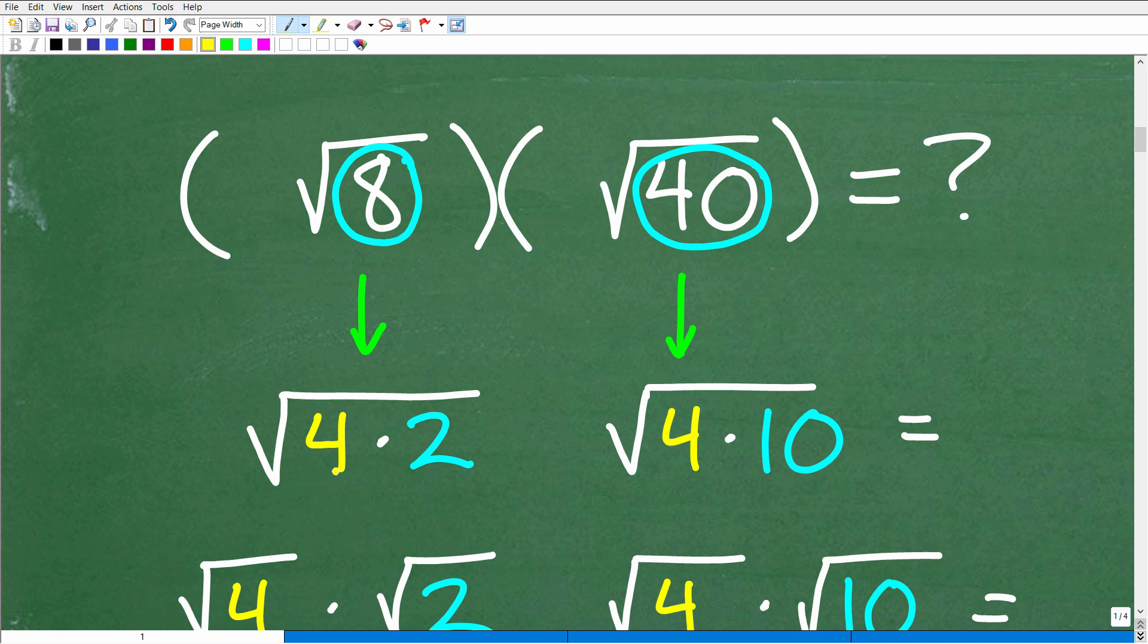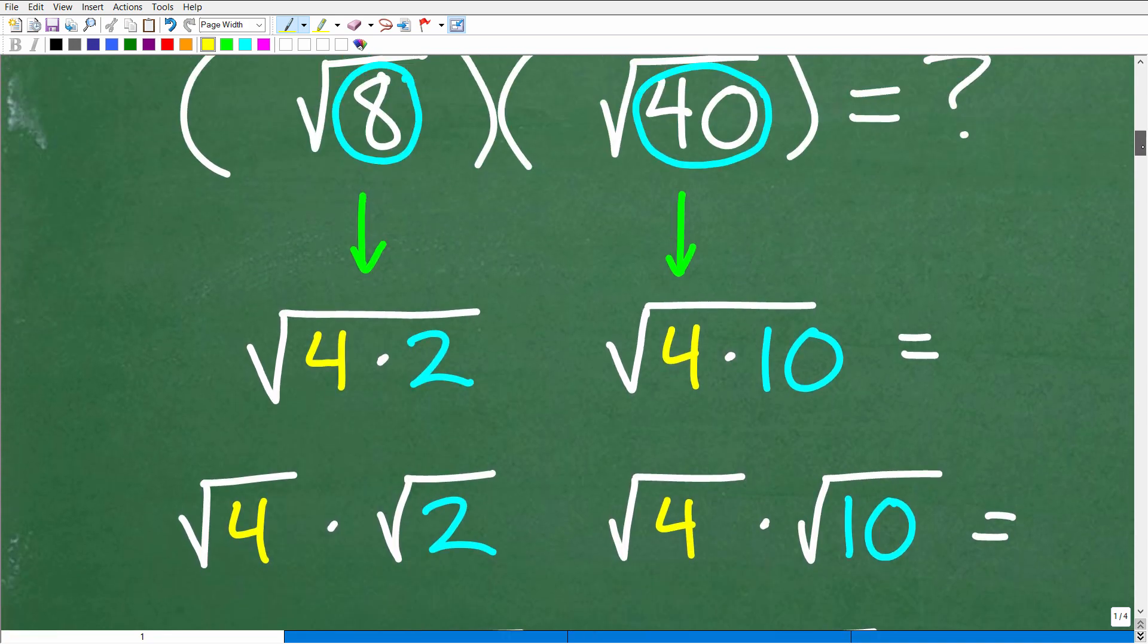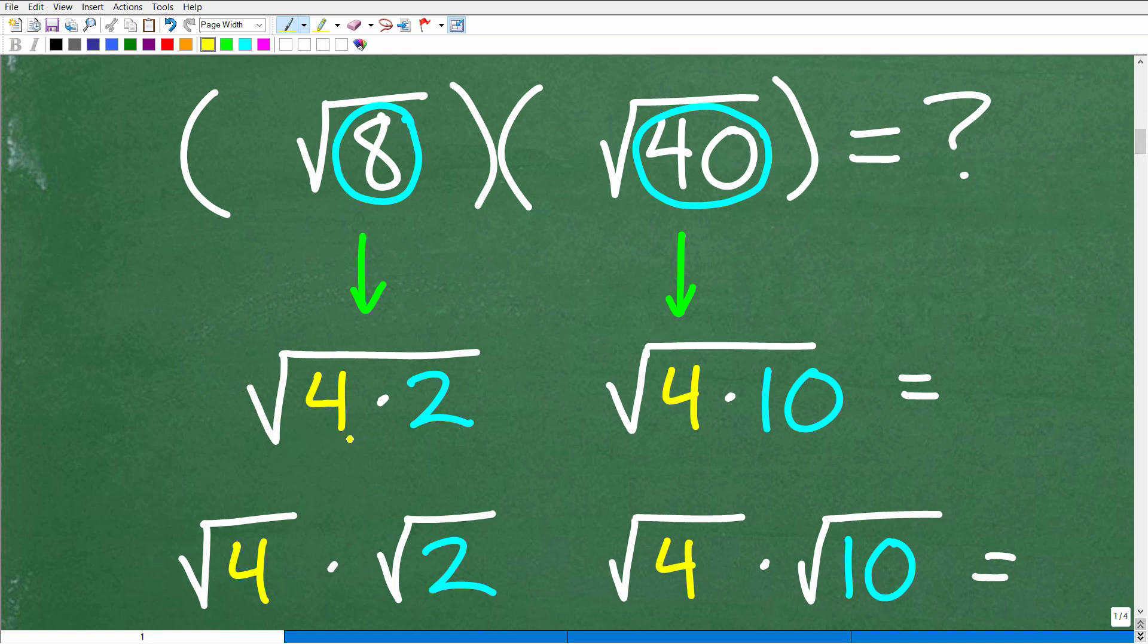So let's take a look at eight here. So eight, I can write as four times two. That's great because four is a perfect square factor. And 40, I can write as four times 10. Again, four is a perfect square factor. Now, what you want to do is use the biggest perfect square factor when you recognize it. If you can't remember or if you just don't recognize the bigger perfect square factor that is a factor of that number, don't worry about it. Just start simplifying little by little. So here we have the square root of eight equal to the square root of four times two. And square root of 40 is equal to the square root of four times 10.